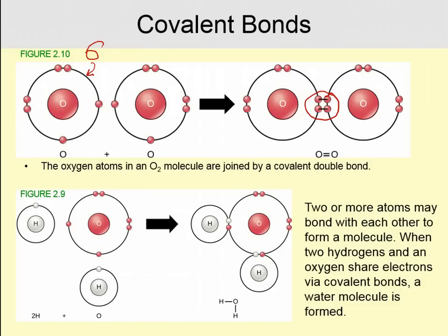If we look at water, H2O, we have two hydrogens — each with one valence electron — and oxygen with six valence electrons. Each hydrogen is going to share an electron with oxygen, giving hydrogen two valence electrons and oxygen eight valence electrons. This is a single bond where one pair of electrons is being shared between two molecules.